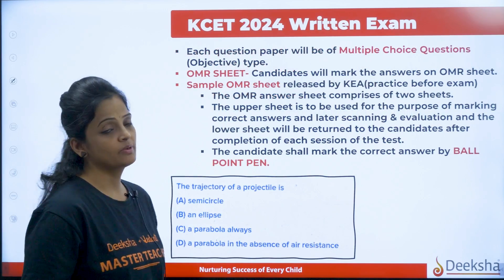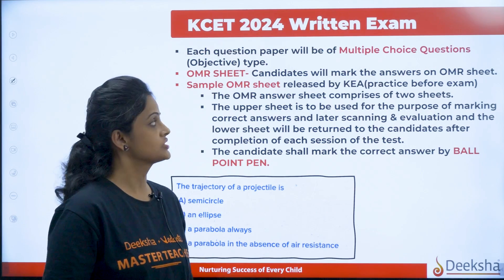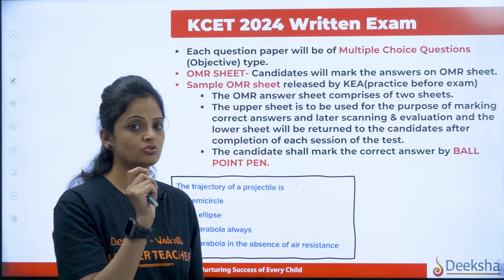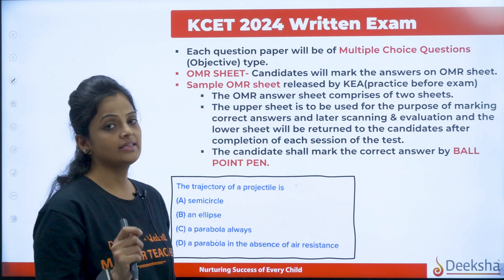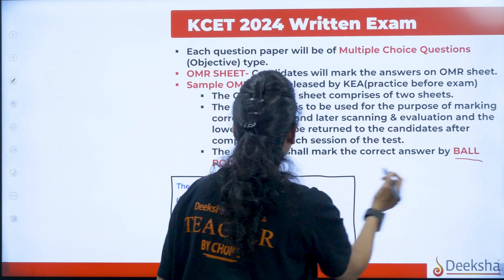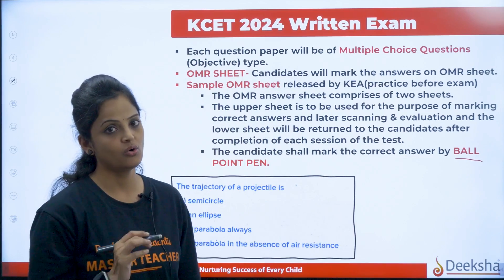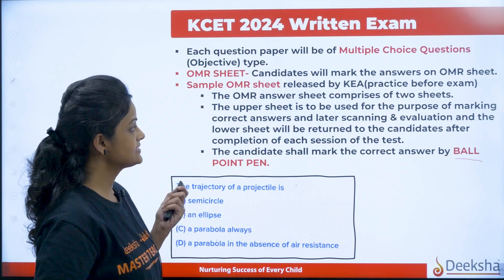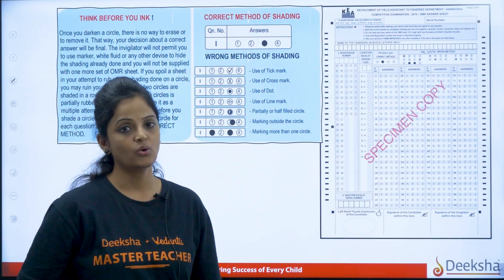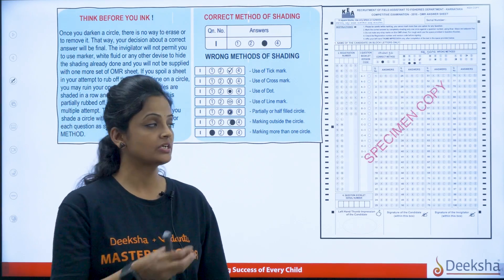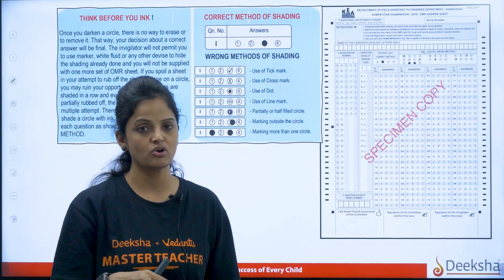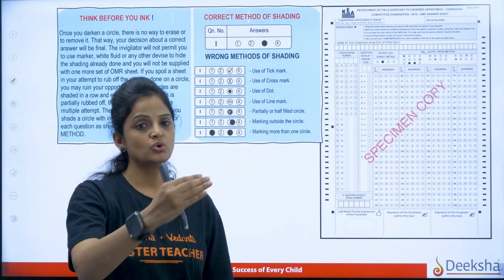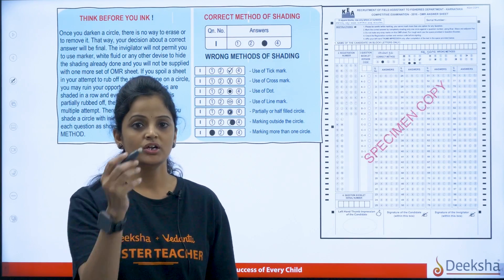Each question paper will be of objective type — multiple choice questions will be there and an OMR sheet will be given to the students. You should properly know how to fill it. You have to use only a ballpoint pen for the OMR sheets. Here we have put a sample question for you — go through that. This is the sample OMR sheet. Download the sample OMR sheet; it will be there in the description box so that you will take mock tests. Whenever you are writing a mock test, make sure that you have your OMR so that it will be practice for you on how to fill it.